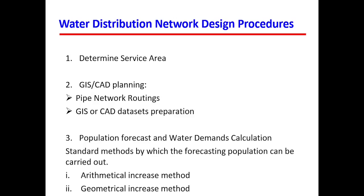In step two, the pipe network routing or alignment — the pipeline layout — should be carried out. This is where you prepare the GIS or CAD datasets for your work. You should determine the required project network piping or routing based on the service area map or customer locations.